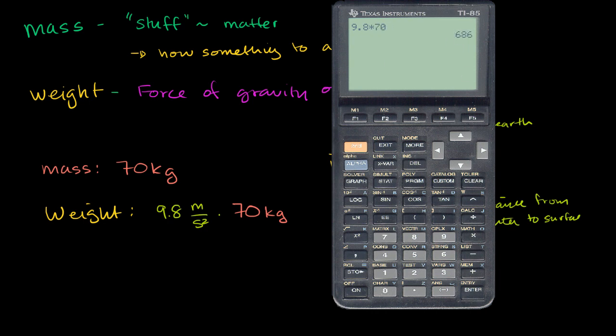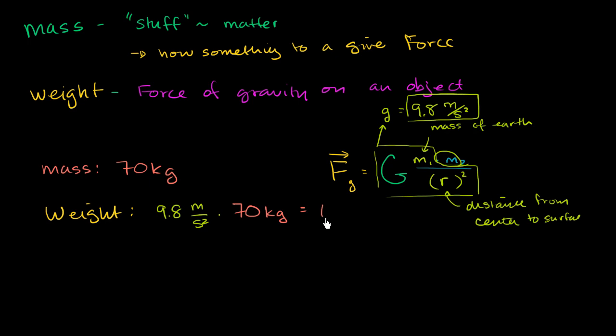So we have 686. So this gives me 686. And then the units are kilogram meters per second squared. And these units, kilogram meters per second squared, are the same thing as a newton. So my weight, and you'll never hear people say this, but my weight on the surface of the Earth is 686 newtons.